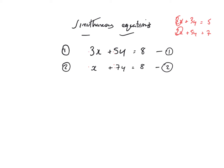So what I need to do is manipulate one of the equations. I'm going to bring that x up to 3x by multiplying that equation by 3. Multiplying equation 2 by 3 means I multiply every bit of it by 3. That's going to give me 3x plus 21y is equal to 24 — I'm going to call that equation 3.